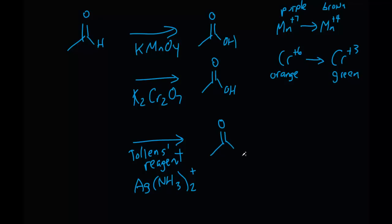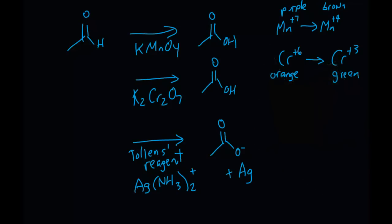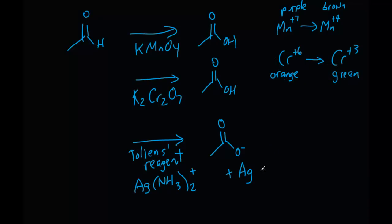Although this will be carried out in a basic environment, so it's going to lose a proton, but you'll still get this carboxylate group. One of the side products is going to be pure silver metal, which again is a great indicator, because when you conduct this in the lab, you're going to get kind of a silver mirror color surrounding the inside of the test tube. So Tollens reagent is a great test for aldehyde, and again, it's through an oxidation reaction.